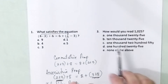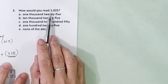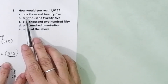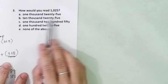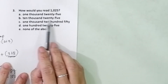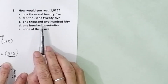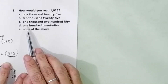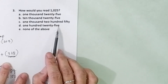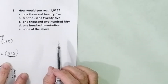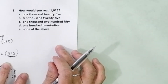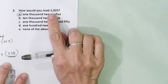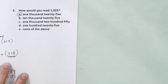Problem number 3. How would you read 1,025? Is it 1,025? 10,025? 1,250? Or 125? None of the above? So this is super easy. The answer is letter A — 1,025.